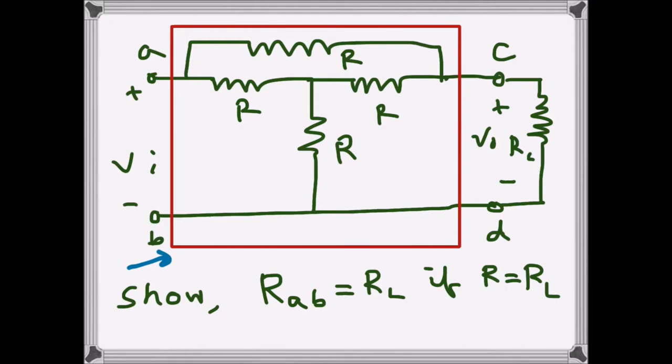And this type of connection form, this looks like a bridge, it's called bridge-T attenuator. So what we have to do for this circuit is we have to show that if R is equal to R_L, that means these values, if these are equal to R_L, then R_ab, that's the resistance seen from here, is equal to R_L.